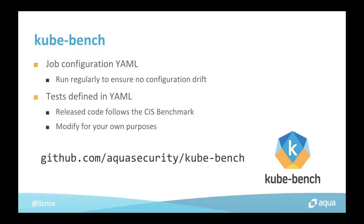The configuration is all set up in YAML files. You could run KubeBench as a container or even as a Kubernetes job. You'd typically want to run it on a regular basis across the cluster to make sure the configuration hasn't changed. The tests themselves are also defined in YAML, which allows you to modify them if you decide you want to use a different setting from what the CIS documents recommend. Once you've decided what your configuration should look like, you can set up the tests to get a clean pass every time, meeting your needs.